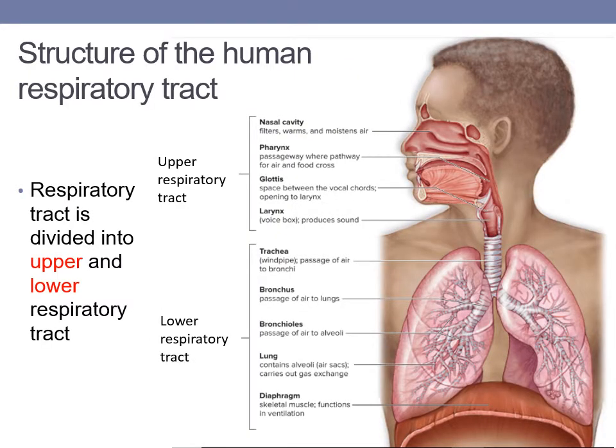The respiratory tract is divided into upper and lower sections. The upper respiratory tract consists of the nasal cavity, pharynx, glottis, and larynx. The lower respiratory tract encompasses the trachea, bronchus, bronchioles, lungs, and the diaphragm.